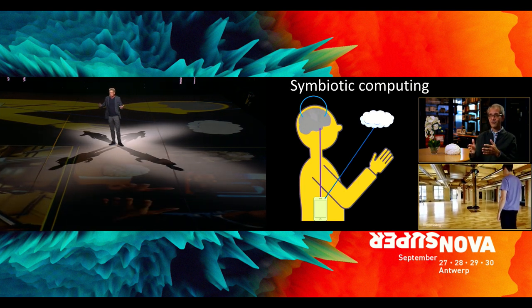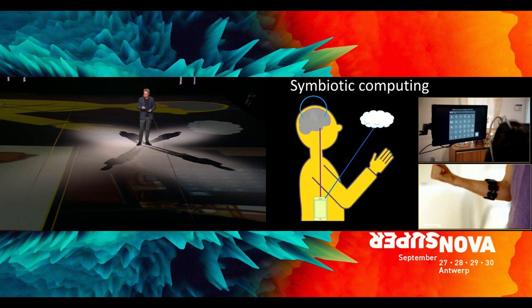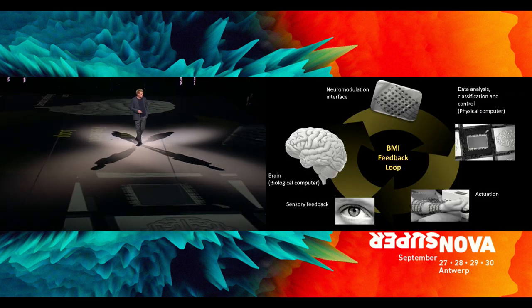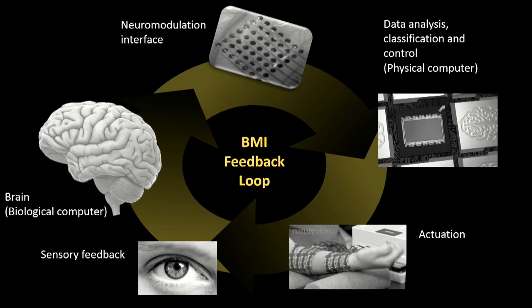So symbiotic computing, where we now have two things, a physical computer and an organic computer working together. This is the loop on how such a system works. As I said, there are basically two computers now interacting and learning from each other. And in between, we have sensing modalities, things that learn and read neural signals, things that allow us to basically manipulate the nervous system, provide feedback, and actually create a closed-loop system, because closed-loop is absolutely very important for this.